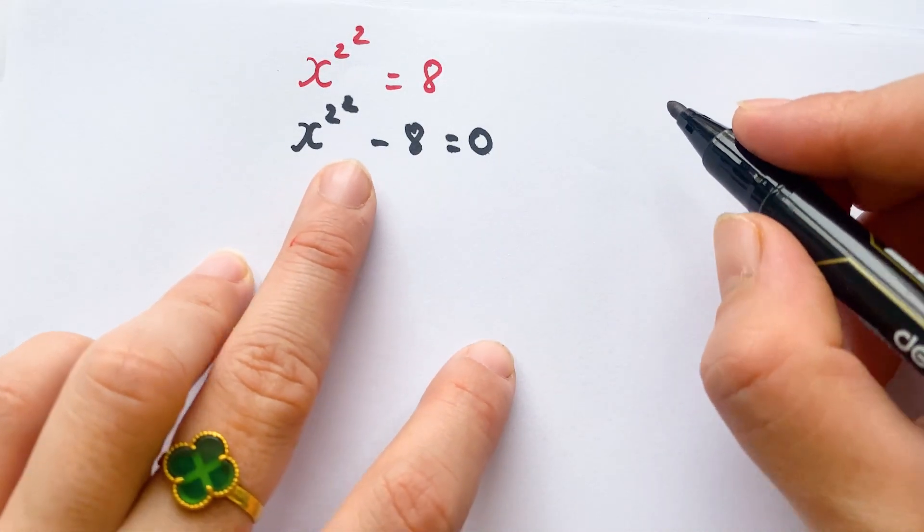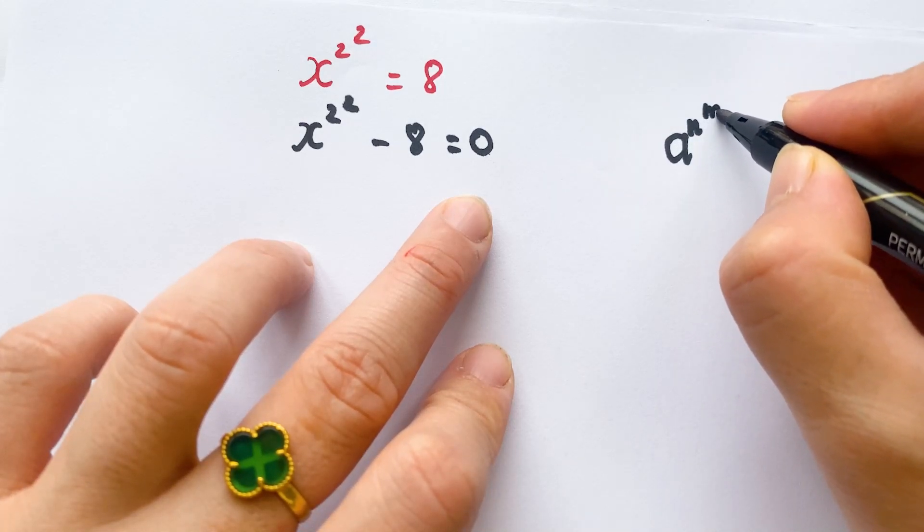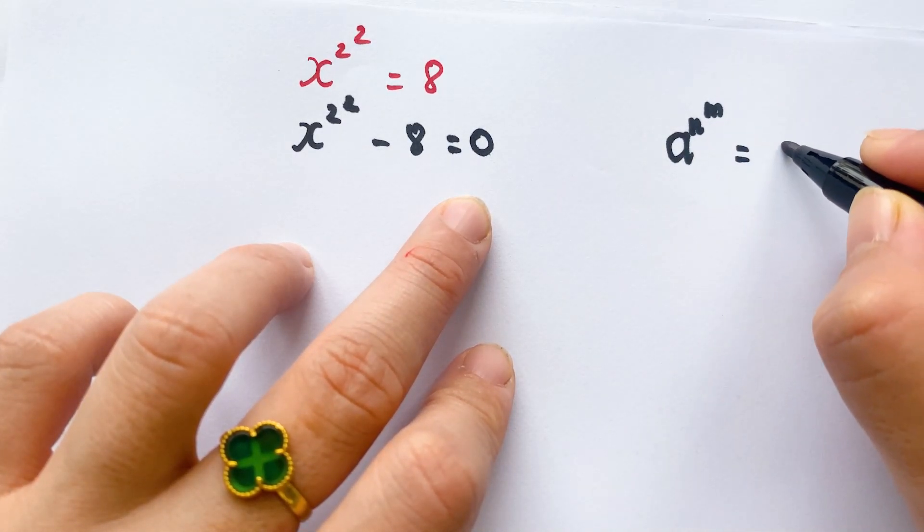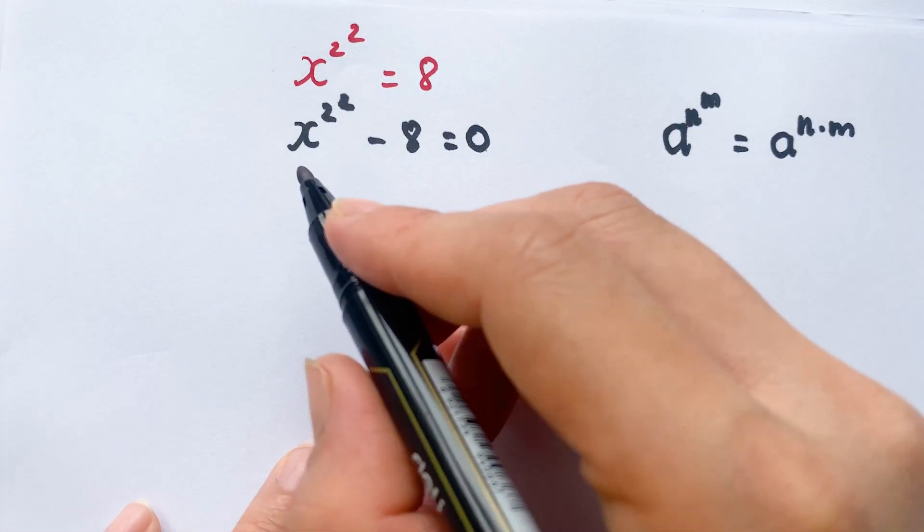You can apply the exponential rule. We can say a^(n^m) = a^(n×m). Apply here.